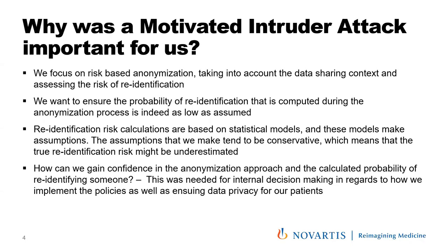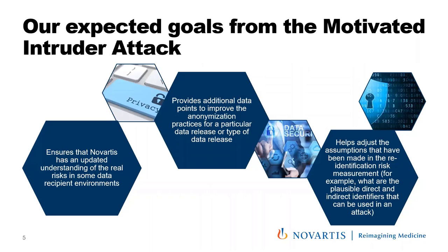Re-identification calculations are based on statistical models with assumptions, and we may be conservative — which could mean the true re-identification risk is being underestimated. That's why we wanted to investigate the motivated intruder attack: to gain more confidence in our anonymization approach and how we calculate re-identification probability. For us, this was needed for internal decision-making and for implementing policy while ensuring data privacy. Motivated intruder attacks can be useful beyond clinical trial data — including for synthetic data. Our three expected goals were: updating our understanding of real risks, improving anonymization practices, and adjusting statistical assumptions.